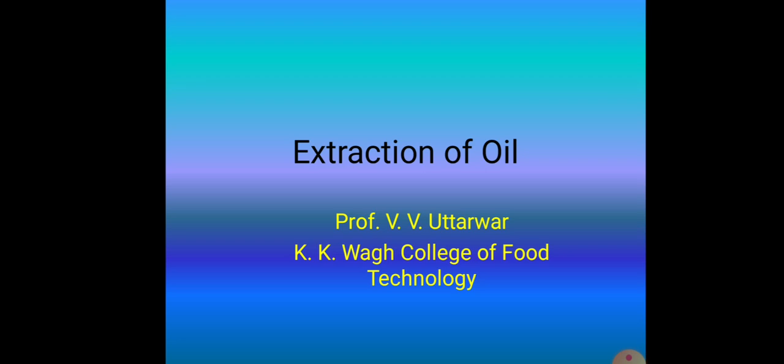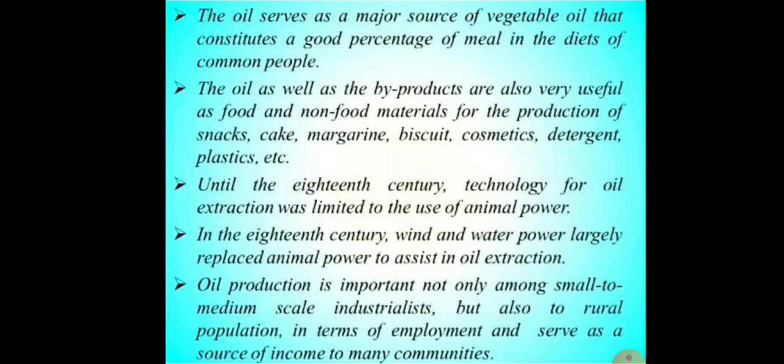We are going to look at only those oilseeds which belong to the legume family. Generally, India occupies a place of pride as the world's largest producer of groundnut, sesame seeds, linseed, and castor seeds. Depending on the period of cultivation, oilseeds are classified as a Kharif crop as well as a Rabi crop. The oil is classified into edible and non-edible.